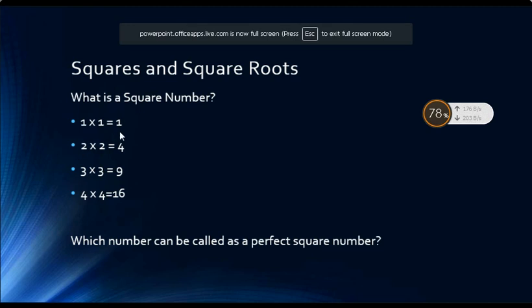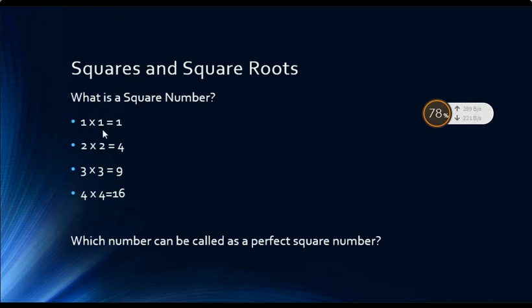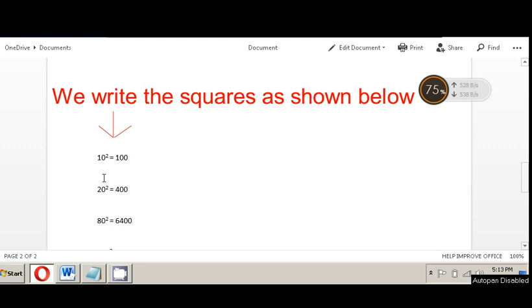Hence, 1 is the square of 1 because 1 into 1 is equal to 1, so 1 is the square of itself. 4 is the square of 2, because 2 into 2 is 4. 9 is the square of 3, because 3 into 3 is 9. 16 is the square of 4, because 4 into 4 is 16.